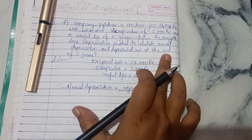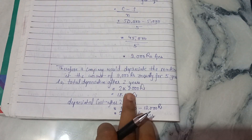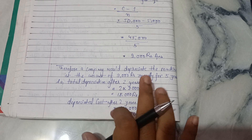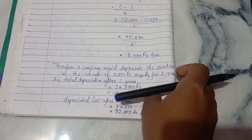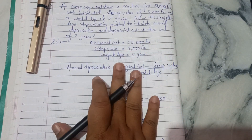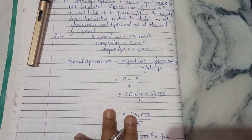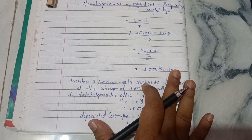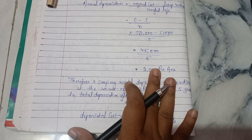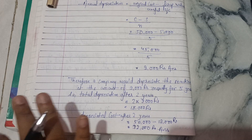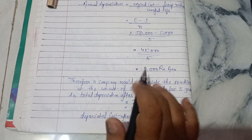If the question asks for the depreciated cost at the end of three years, simply multiply the annual depreciation by three. This is how you solve depreciation questions using the straight line method. In the next lecture we will see the sinking fund method of depreciation and its importance. If you found this video useful, please like, share, and subscribe the channel. Thank you for watching.